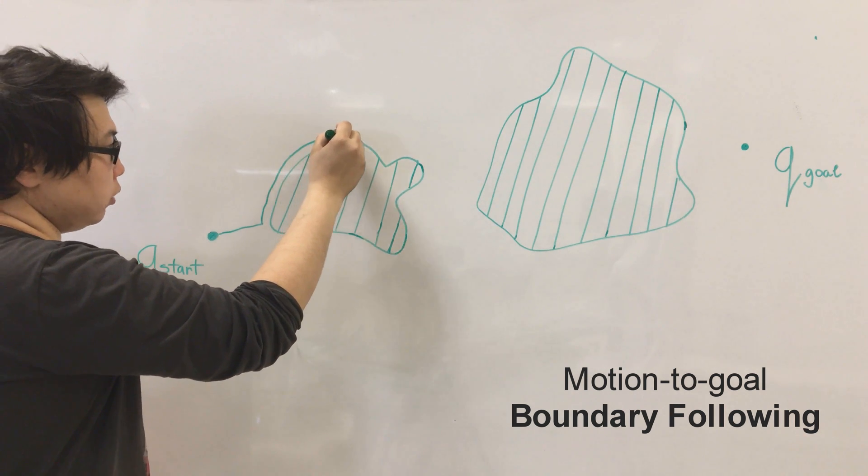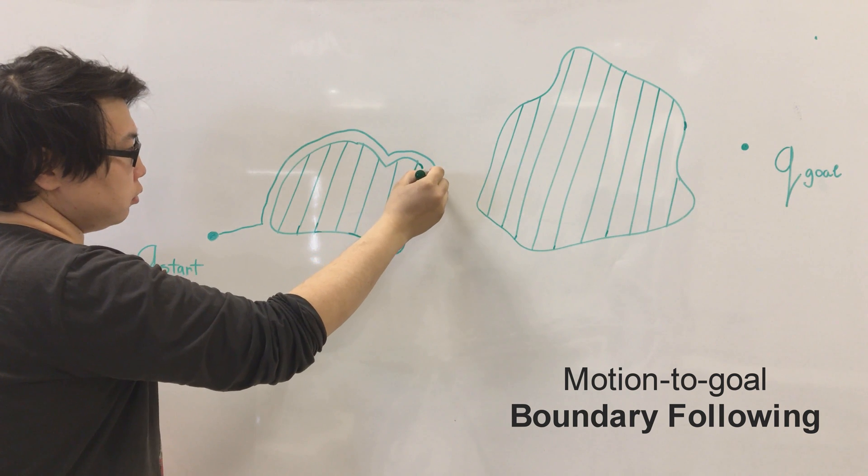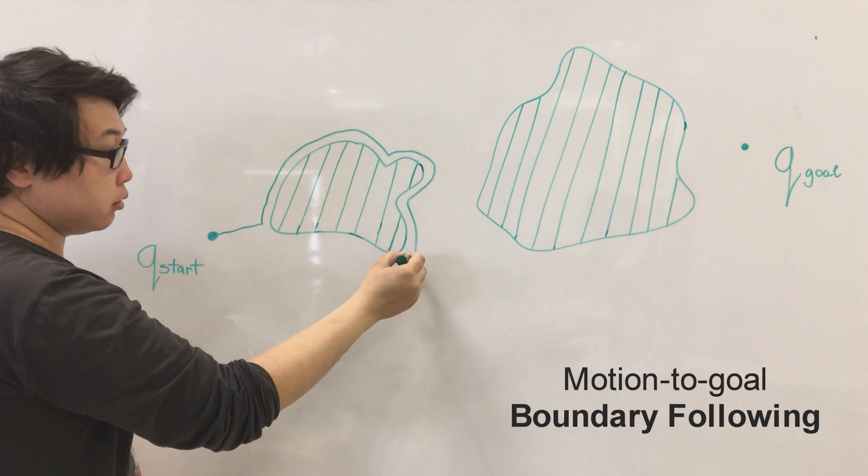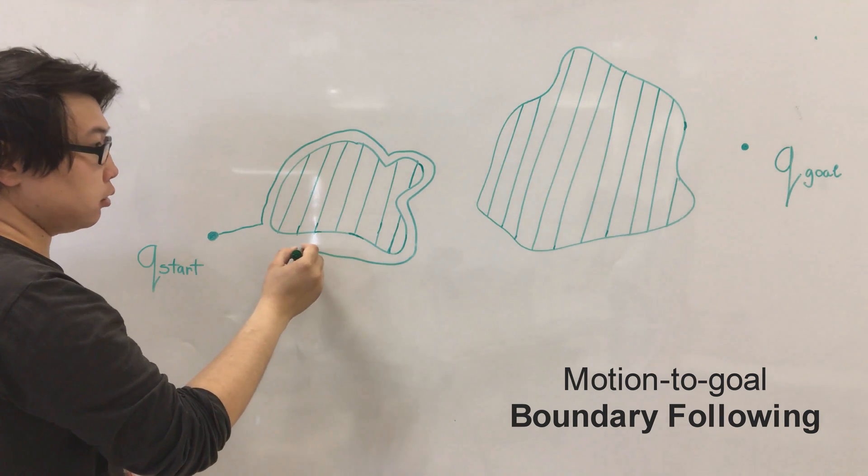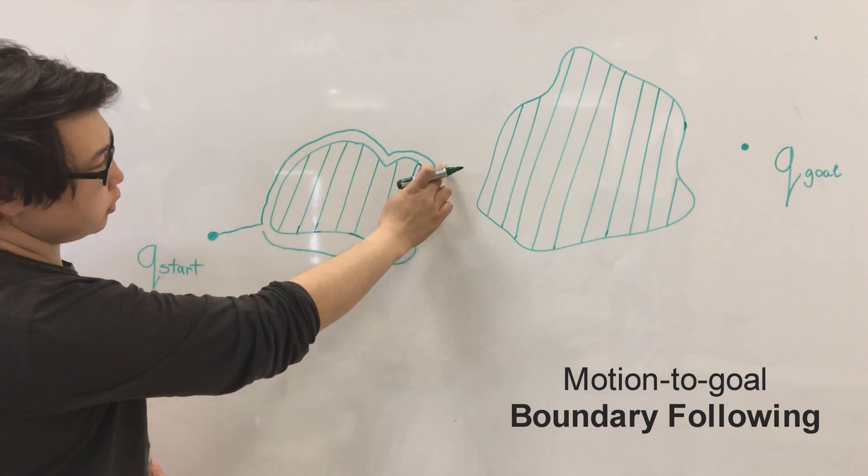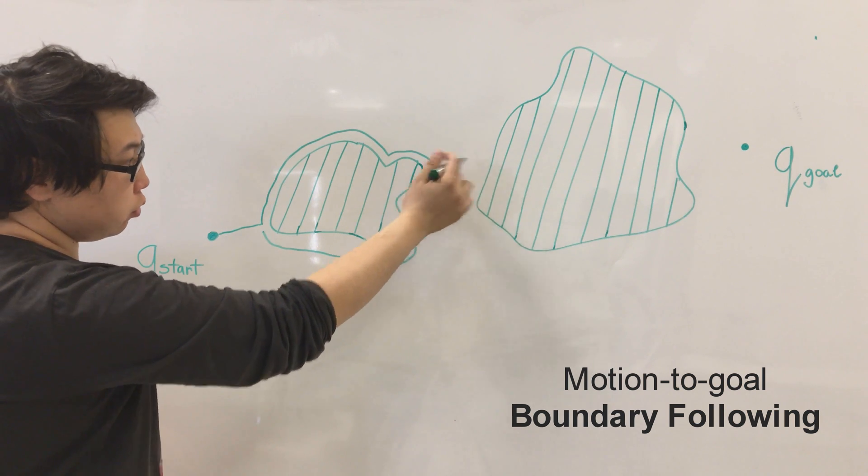Also while we are going we try to know the length towards the Q goal. So we detected that the nearest point to the goal is here.